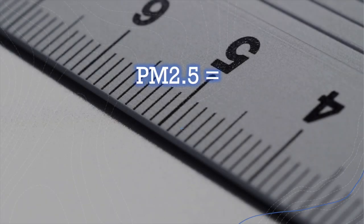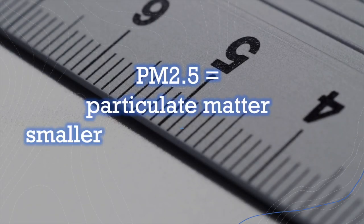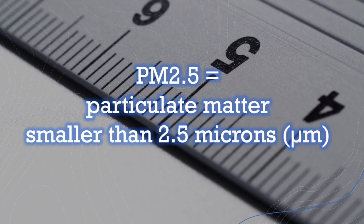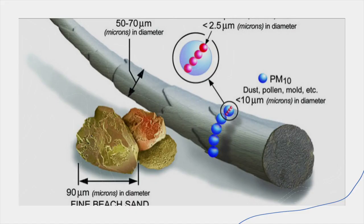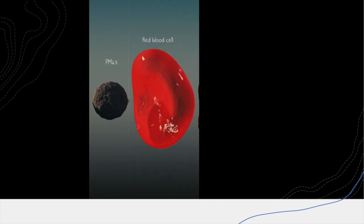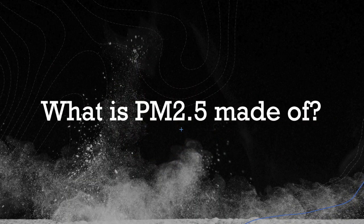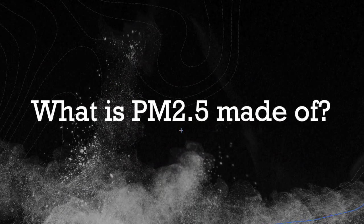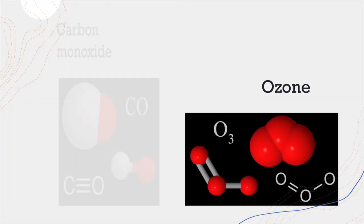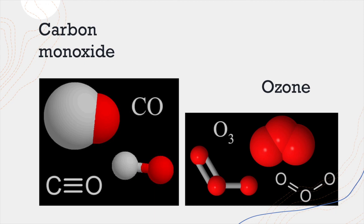The first thing we have to understand is what we're talking about when we say PM 2.5. PM 2.5 is short for particulate matter that is smaller than 2.5 microns. It's about 30 times smaller than the width of a human hair — even smaller than the size of a red blood cell. These tiny particles can sometimes be called aerosols. PM 2.5 is not like other forms of air pollution such as ozone or carbon monoxide, which are specific chemical compounds.